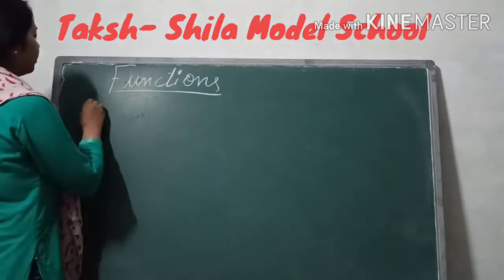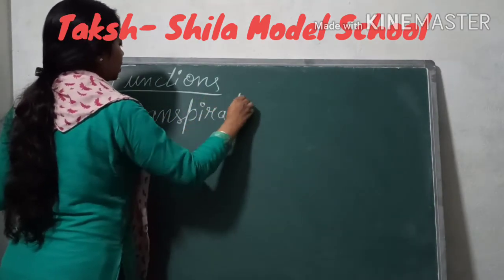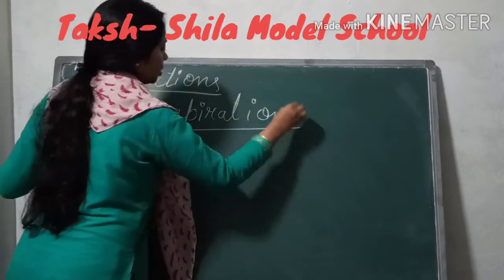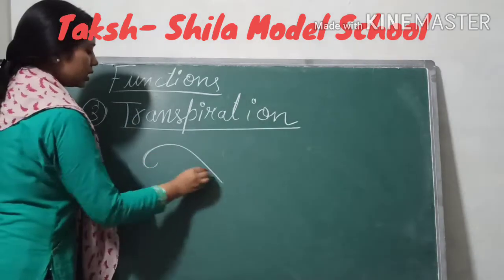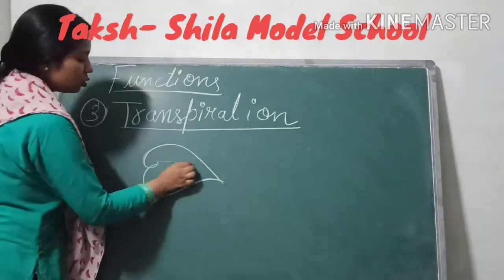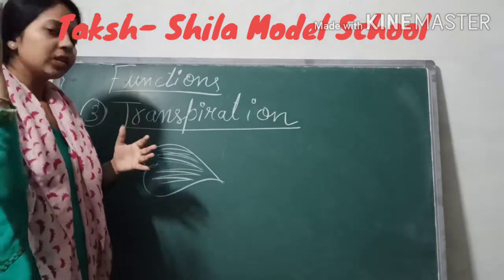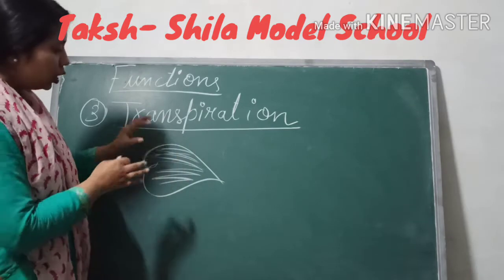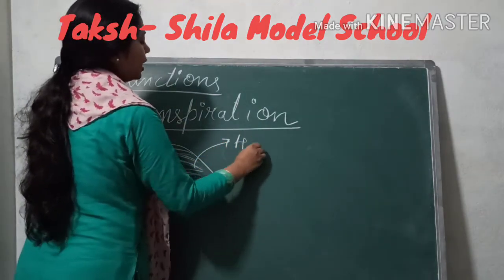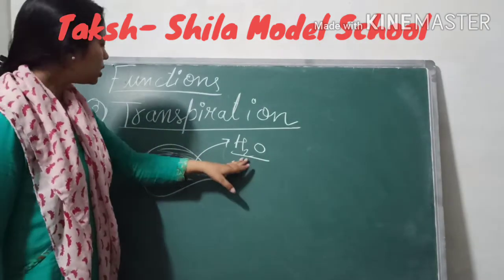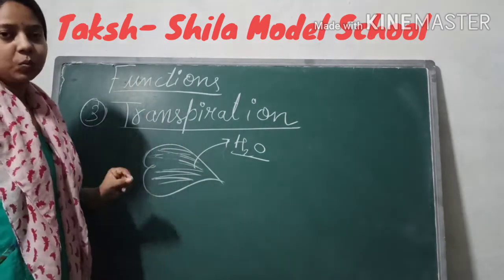The third function of leaf is transpiration. It helps in the process of transpiration. Transpiration is the removal of water from the surface of the leaf. Stomata are present on the leaf surface, and when sunlight falls on the surface, water is also removed through the stomata. The removal of water from the surface of leaves is known as transpiration.